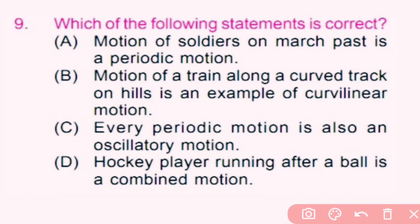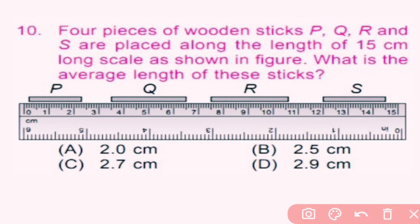Question number 9: Option A — motion of a soldier on march past is a periodic motion — is incorrect; the soldier on march past shows rectilinear motion. Option B — motion of a train along a curved track on a hill is an example of curvilinear motion — is correct, as motion along a curved path is called curvilinear motion. Option C — every periodic motion is also an oscillatory motion — is incorrect; all oscillatory motions are periodic but not all periodic motions are oscillatory. Option D — a hockey player running after a ball is a combined motion — is also incorrect; the example of combined motion is a wheel of a cycle in motion, combining rotational and rectilinear motion. So only B is correct.